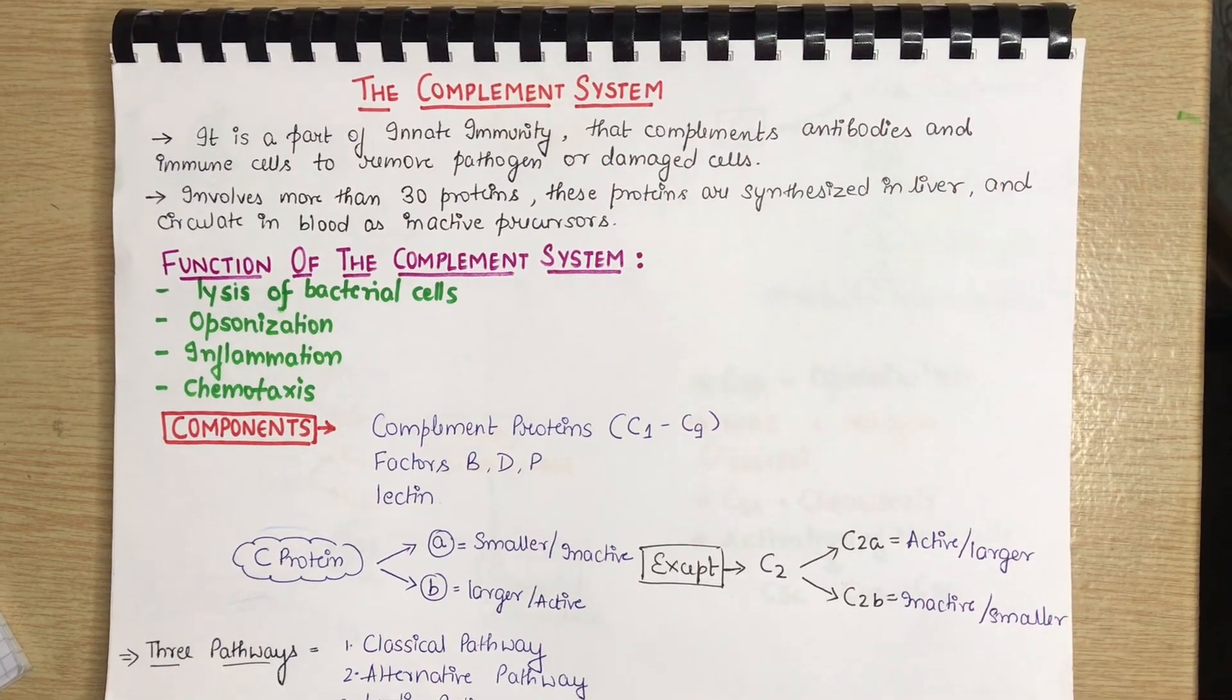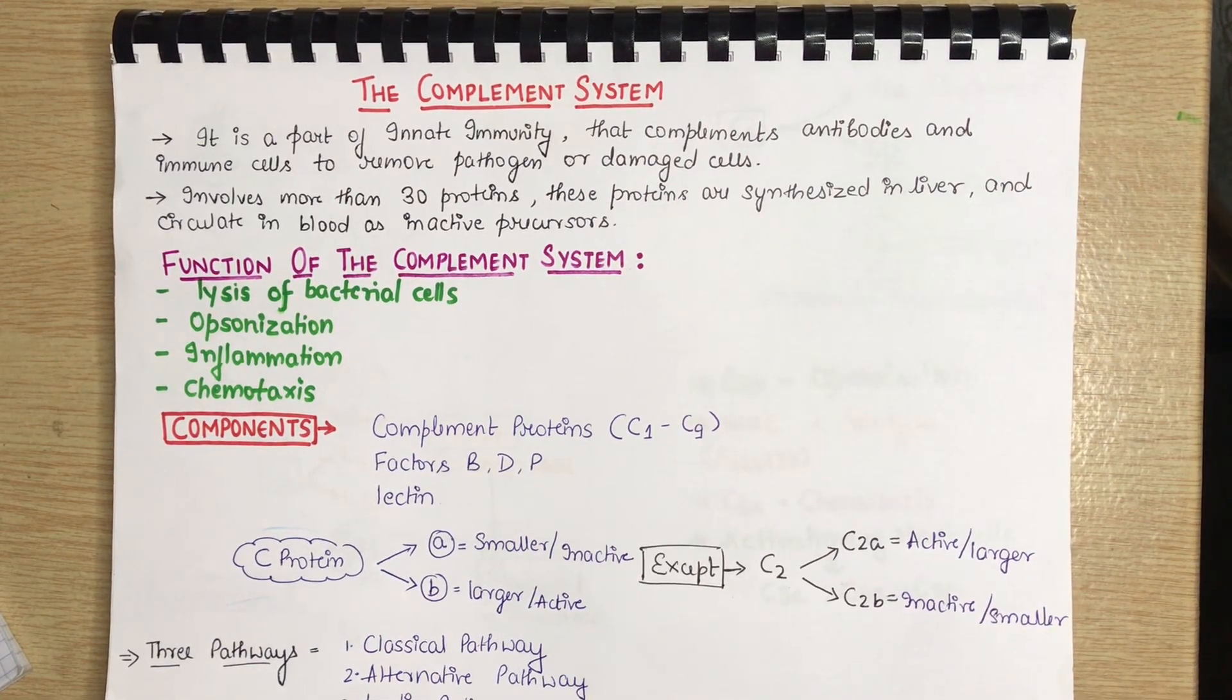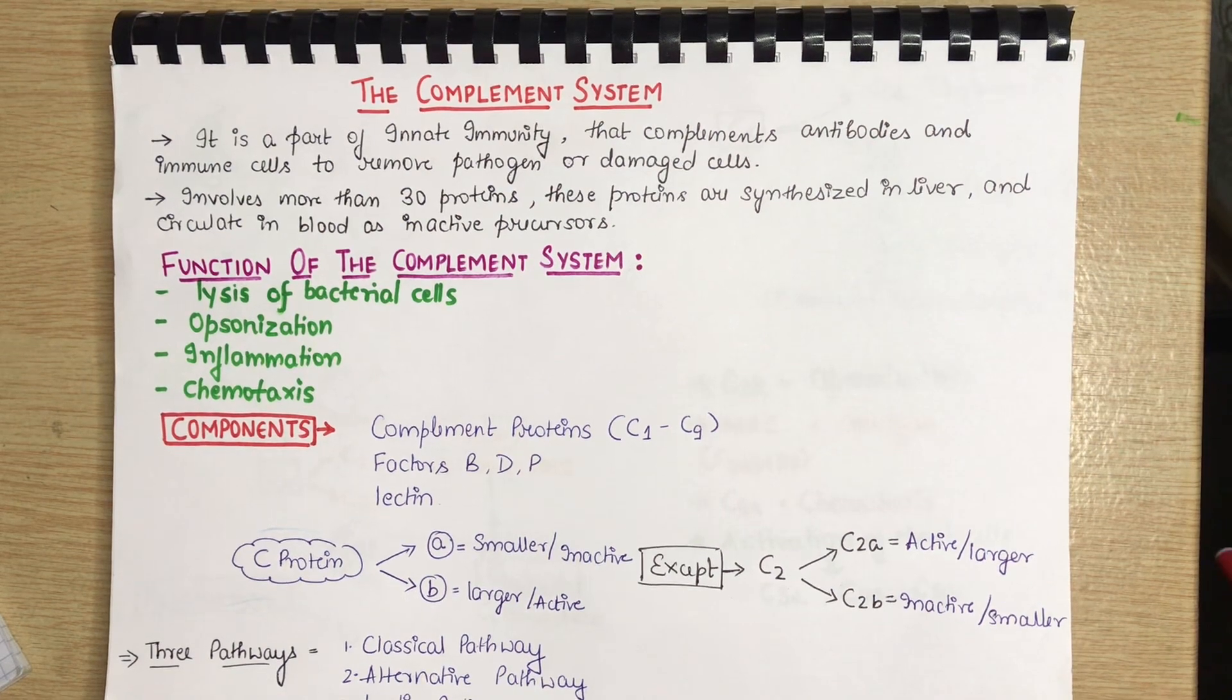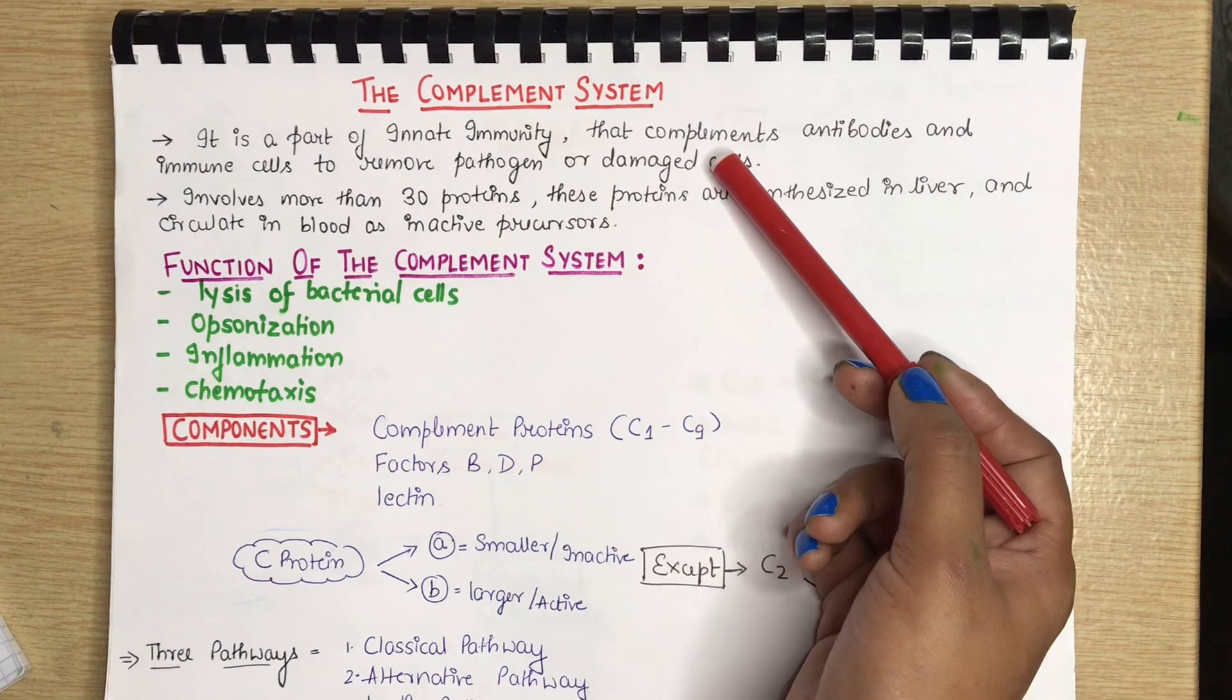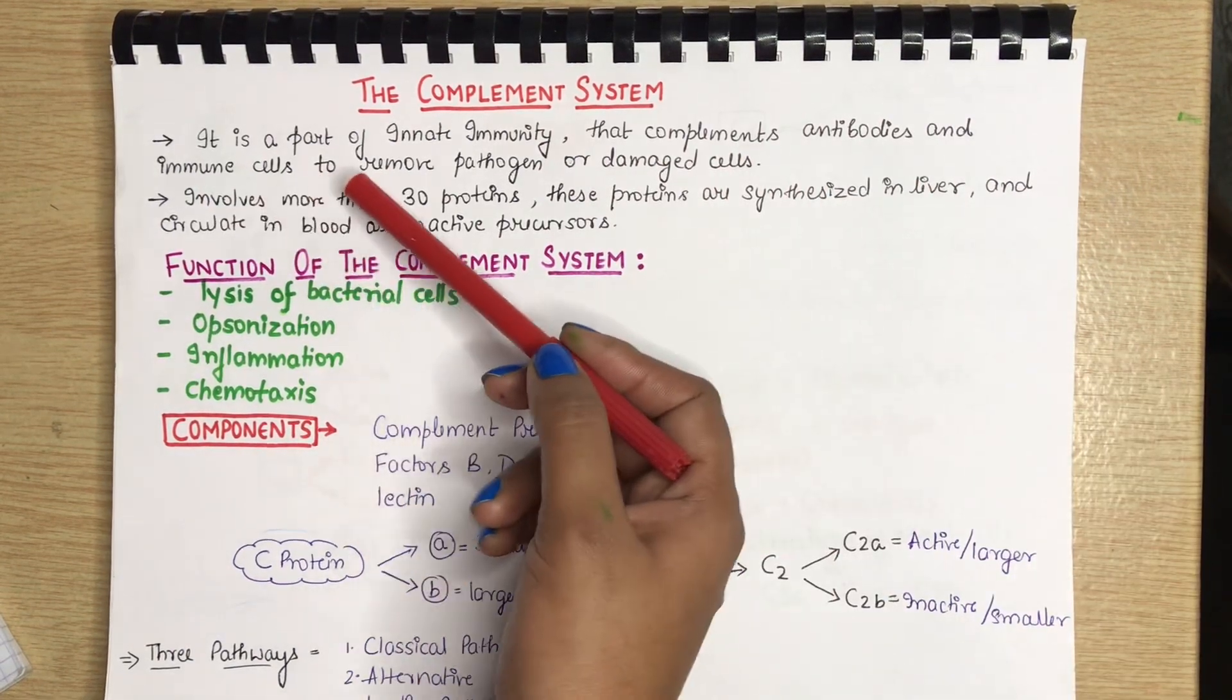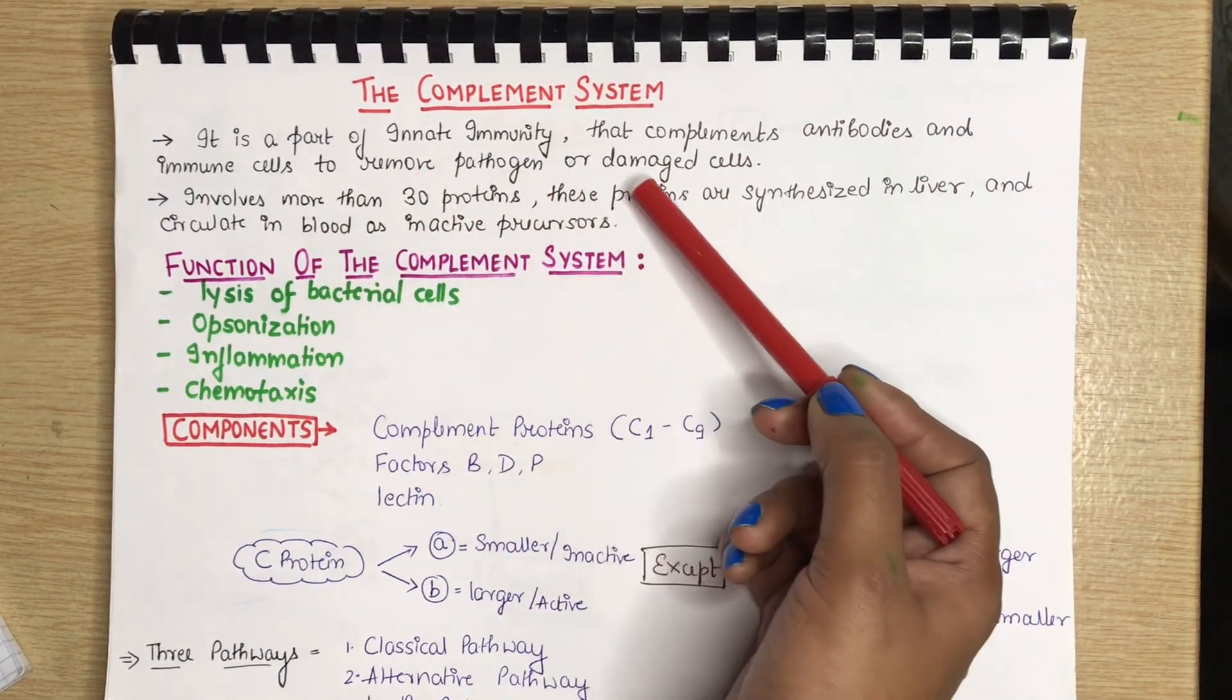Hello guys, in this video we will be studying about the complement system. The complement system is a part of innate immunity that complements antibodies and immune cells to remove pathogen or damaged cells.